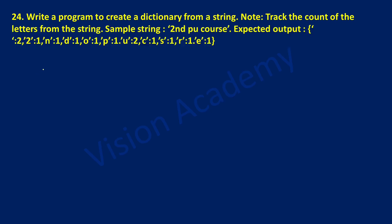Hello and welcome to Vision Academy. In this video, we are going to study lab program 24: write a program to create a dictionary from a string. We need to track the count of the letters from the string. The sample string is 'second PU course' and the expected output is given here.